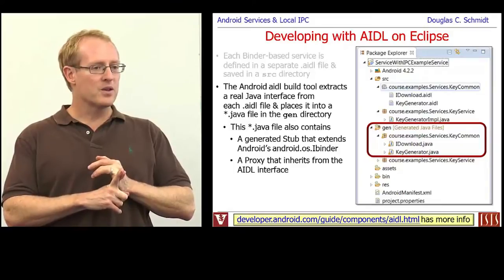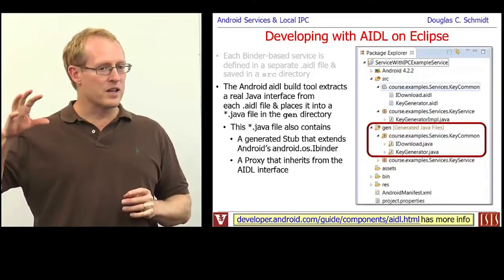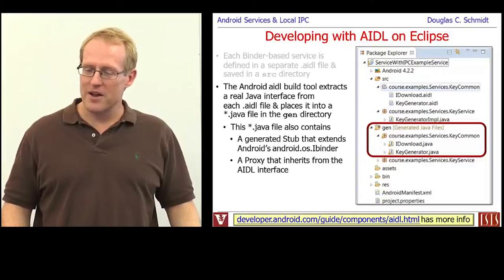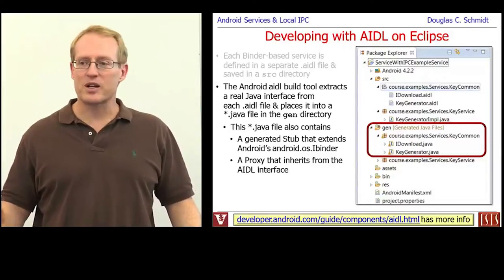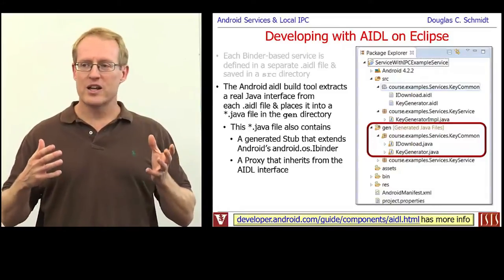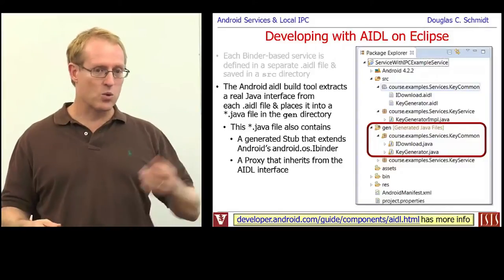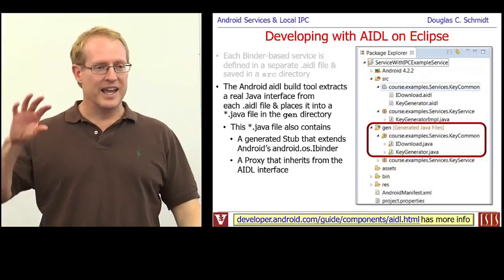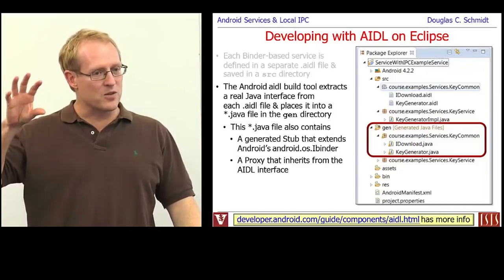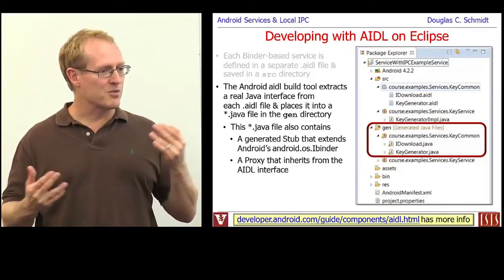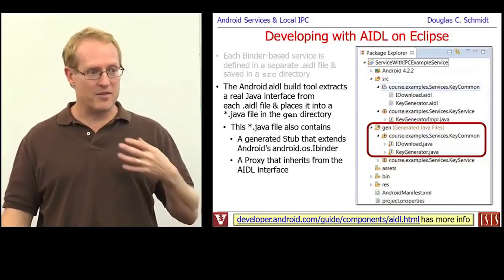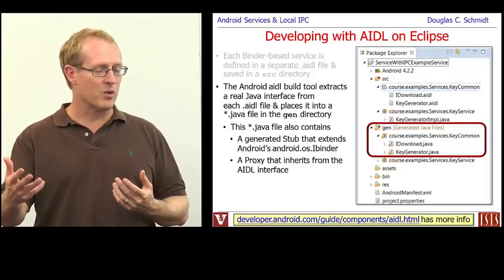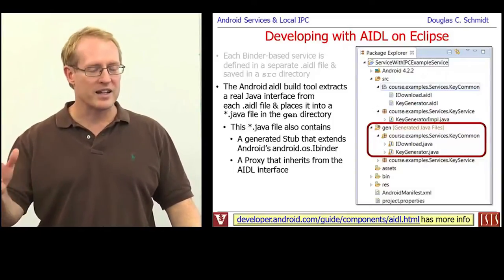The generated Java files also contain a stub, which is going to be used by the service that implements the interface — or whoever the implementer is. And there's also something called a proxy, which is what the client will be using. When dealing with conventional synchronous communication between activities and services, the proxy is typically used by the activity or client, and the stub is used by the service. But when we start doing asynchronous calls, the concept of client and service gets flipped around — an activity may also implement a stub so it can receive callbacks from a service invoking one-way methods on callback objects passed to it.